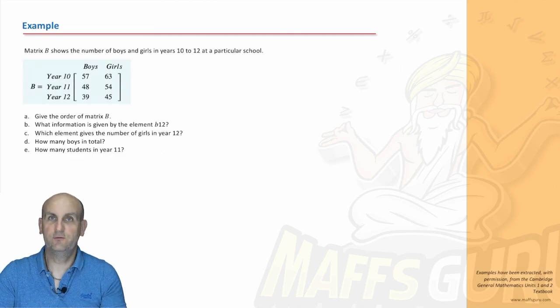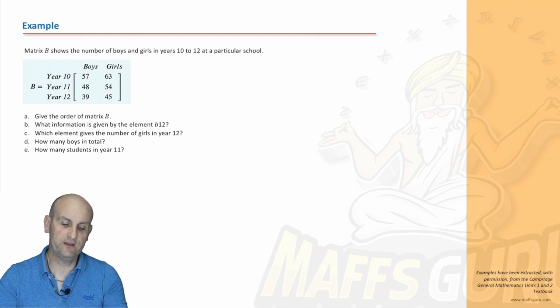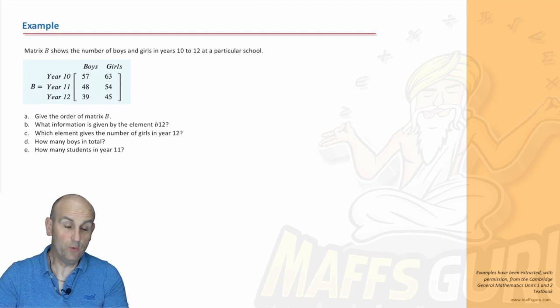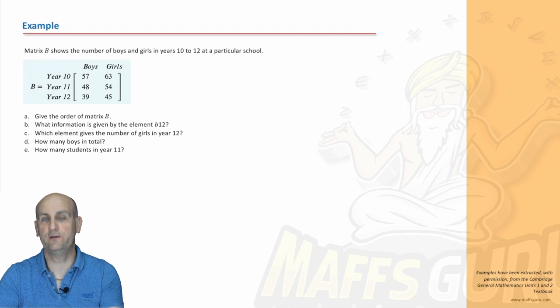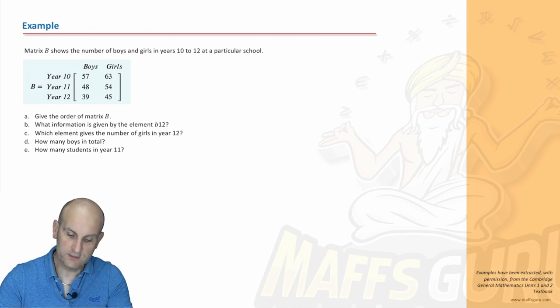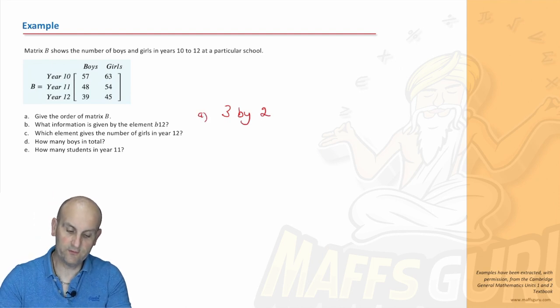Here's an example from the Cambridge Generalist textbook. Thank you very much, Cambridge, for letting me use your videos. You guys rock! Phenomenal resource, if I do say so myself. Here's an example. Matrix B shows the number of boys and girls in years 10 to 12 at a particular school. A. What is the order of Matrix B? There you go. C. It's asking for the order. Do you remember what it is? The order is the size of the matrix. So, it's rows, one, two, three, by two columns. So, I could write a three by two. That would be perfectly acceptable for my answer for part A.